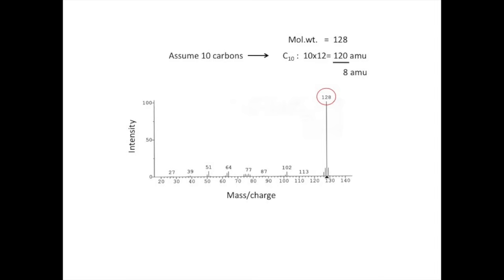If we have 10 carbon atoms, then we can account for 120 AMU. That leaves 8 mass units to account for. If we assume now that we are not dealing with an organometallic compound, then we can infer that 8 implies 8 hydrogen atoms. So we have C10H8, which is the formula for naphthalene. I hope that you see that knowing the number of carbon atoms is a very valuable clue in generating a reasonable molecular formula. Let me show you how to find the carbon number.